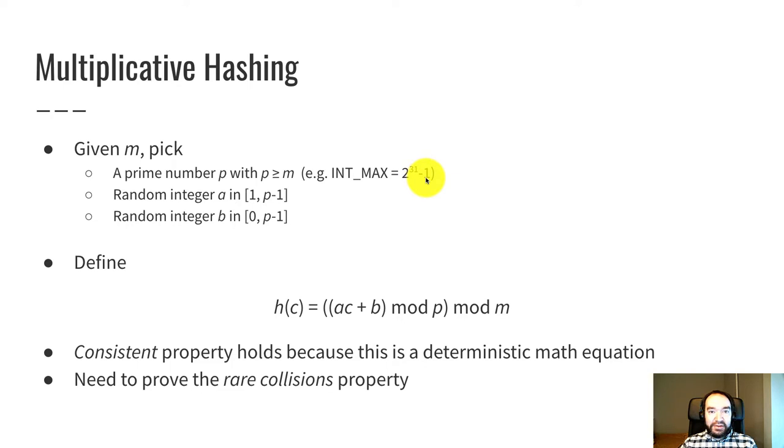But anyway, this works for any large prime that's bigger than m. And then we make two random integer choices. You could call rand for these. We need a random integer a and another random integer b. And a has to be in the range 1 through p minus 1.